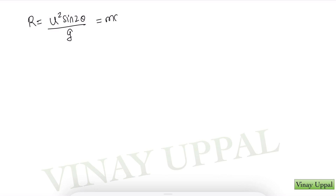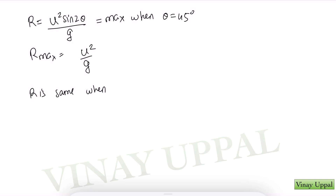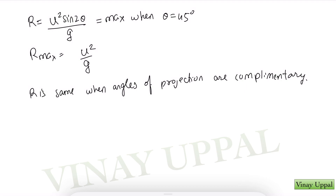Range is maximum when θ = 45°, giving R_max = u²/g (assuming constant speed). The range is the same for complementary angles — for example, 30° and 60° give the same range because sin2θ is the same for both.